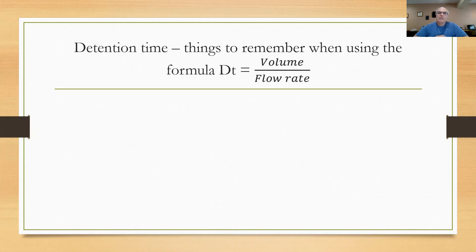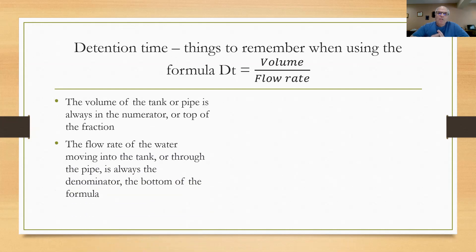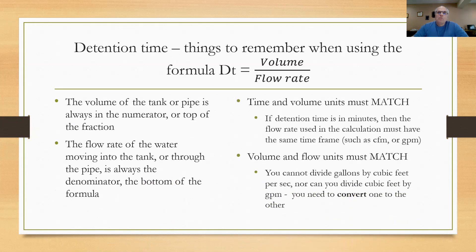Now here's some things that you should remember when you're doing a detention time calculation. When you're using the formula of detention time equals volume divided by flow rate, first of all, the volume of the tank or the pipe or the vessel that you're filling or emptying is always going to be on the top of the fraction, the numerator. The flow rate, the amount of water that you're taking in or out of the vessel always goes in the denominator or the bottom of the formula. Some other important things that you need to remember is that the time and volume units must match. If they're asking you detention time in minutes, then the flow rate that you use has to be converted to cubic feet per minute or gallons per minute. And maybe more importantly, the volume and flow units have to match too. You cannot divide gallons by cubic feet per second, nor can you divide cubic feet by gallons per minute. You need to convert one or the other.